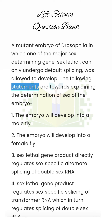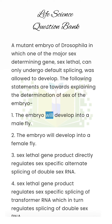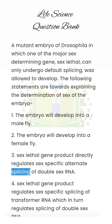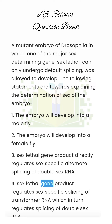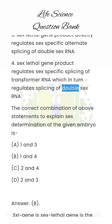The following statements explain the determination of sex of the embryo. 1. The embryo will develop into a male fly. 2. The embryo will develop into a female fly. 3. Sex-lethal gene product directly regulates sex-specific alternate splicing of double-sex RNA. 4. Sex-lethal gene product regulates sex-specific splicing of transformer RNA, which in turn regulates splicing of double-sex RNA.